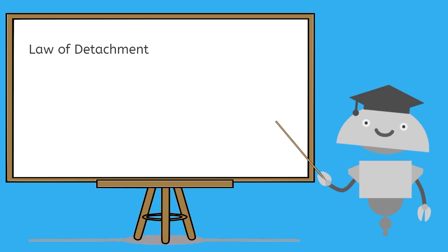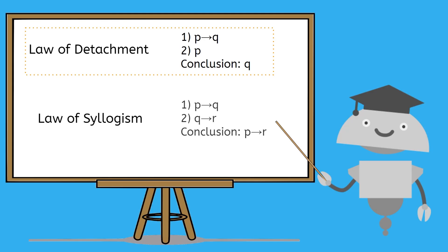Now you can apply the law of detachment and the law of syllogism to be able to make conclusions from given information. Don't forget that the important information here is the structure of the law, not so much the letters themselves. One thing that might be helpful is for you to think of these laws with generic placeholders for each hypothesis and conclusion to make it clear that the letters that are used are not important, but the structure is. See you next time!